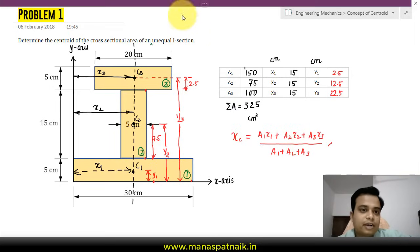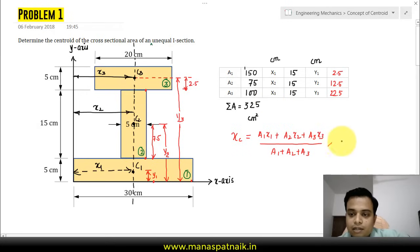Then you have one more, let me use a different color, a green color. That's yc equals A1·y1 plus A2·y2 plus A3·y3, whole divided by sum of all the areas.